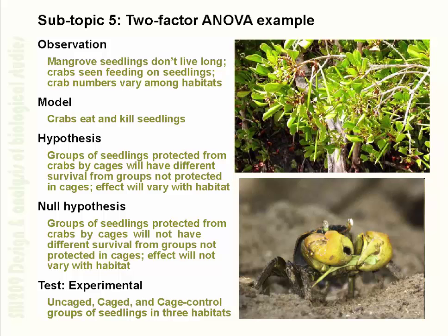The test involves three treatments — uncaged, caged, and caged control — in three habitats. The habitats are low on the shore, in the middle of the shore (the main tidal flat area), and in the hinterland or the area towards the back of the mangroves. Caged seedlings use wire fencing mesh cages to keep crabs out; uncaged is self-explanatory; cage controls are cages with two sides removed so crabs can go in. The focus is on the analysis and, in particular, the meaning of interaction.